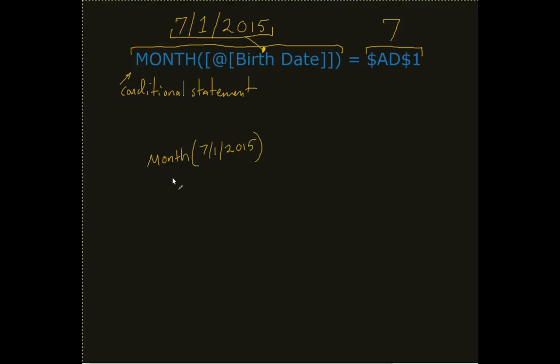What this function does, if we think about functions again, is it's going to take in some parameter and give me some output, which in this case is going to be 7.